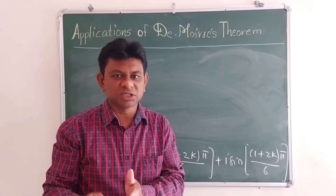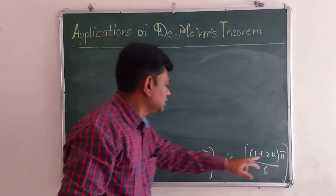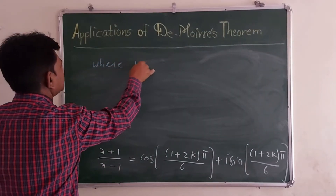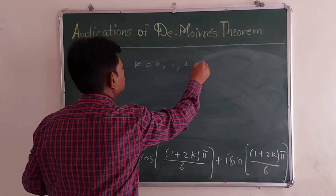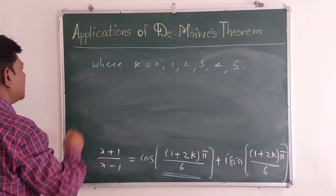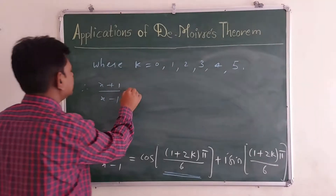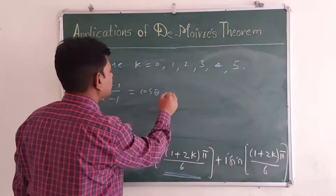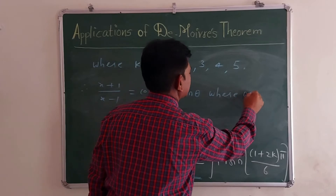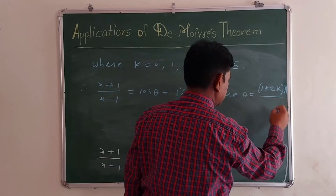The degree of the given equation is 6, therefore the given equation has 6 required roots. So k = 0, 1, 2, 3, 4, and 5. We denote this bracket as x = θ. Therefore, we write (x+1)/(x-1) = cos θ + i sin θ, where θ = (1+2k)π/6.